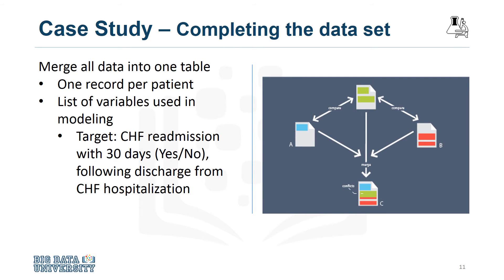Aggregating the transactional data at the patient level meant merging it with the other patient data, including their demographic information such as age, gender, type of insurance, and so forth. The result was the creation of one table containing a single record per patient, with many columns representing the attributes about the patient and his or her clinical history. These columns would be used as variables in the predictive modeling.